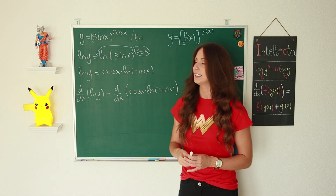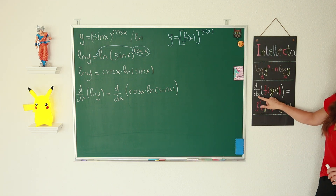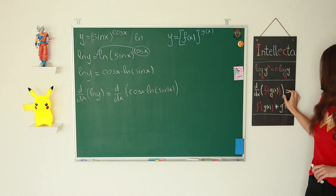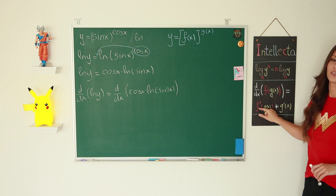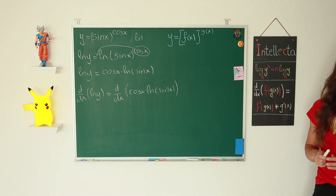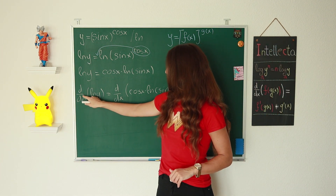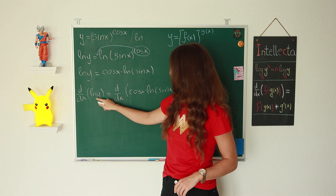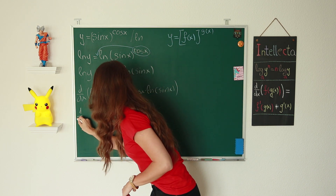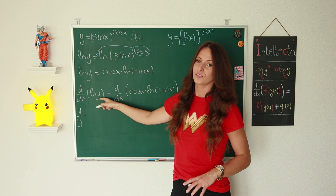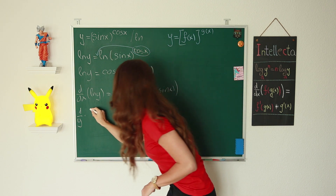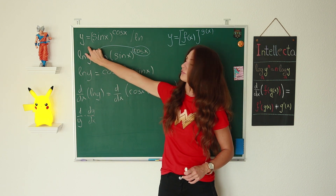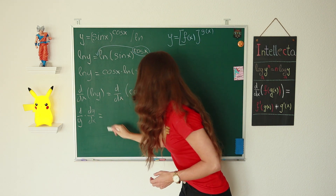The chain rule states that for a composite function f(g(x)), the derivative equals the derivative of the first function times the derivative of the second function. So for ln(y), we differentiate ln first to get 1 over y, and then since y is also a function of x, we multiply by dy/dx. So the left side becomes (1/y)(dy/dx), and our goal is to find dy/dx.